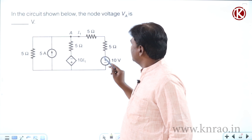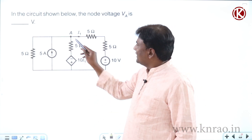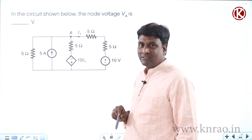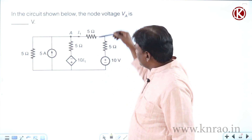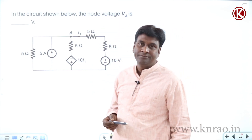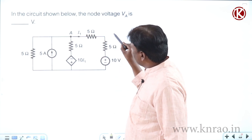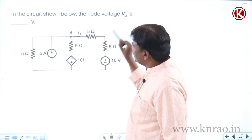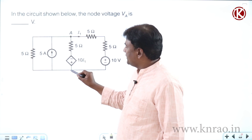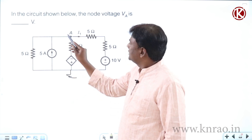Now if you go with nodal analysis, how many nodes are there? One, two, three, four. The moment they ask VA here, the 5 ohms and 5 ohms can be connected in series, so they become 10 ohms. That node will then vanish.